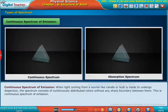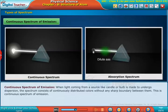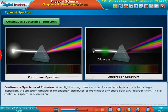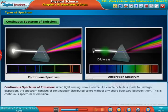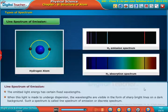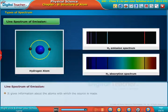Continuous spectrum of emission: When light coming from a source like a candle or bulb is made to undergo dispersion, the spectrum consists of continuously distributed colors without any sharp boundary between them. This is the continuous spectrum of emission.